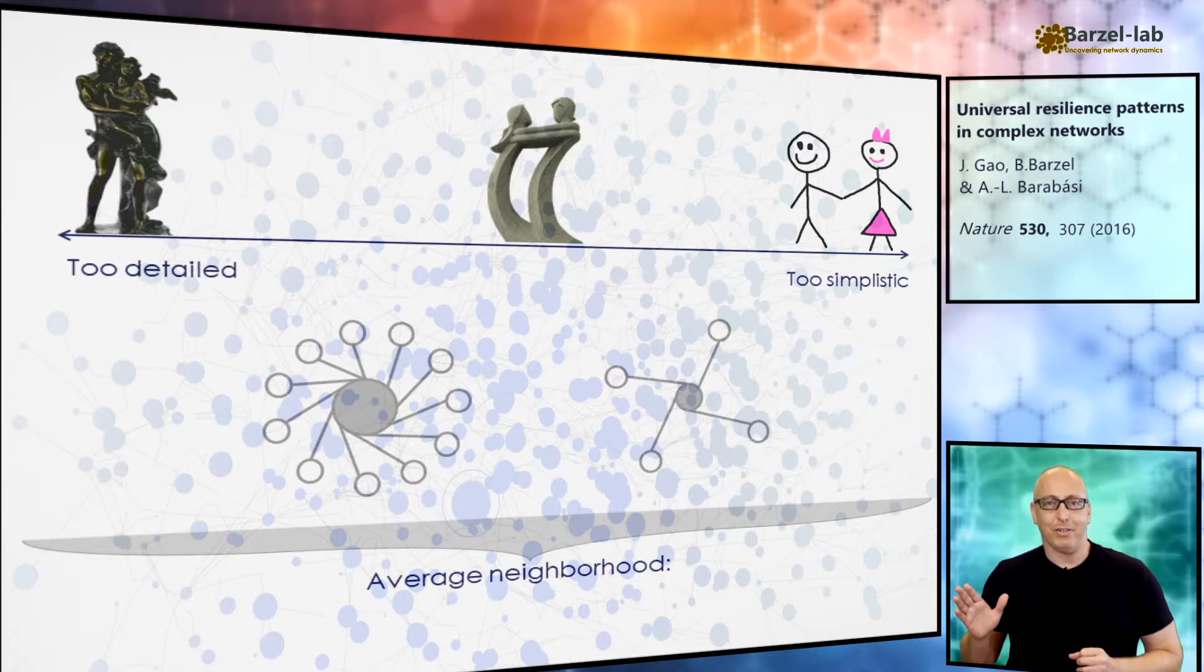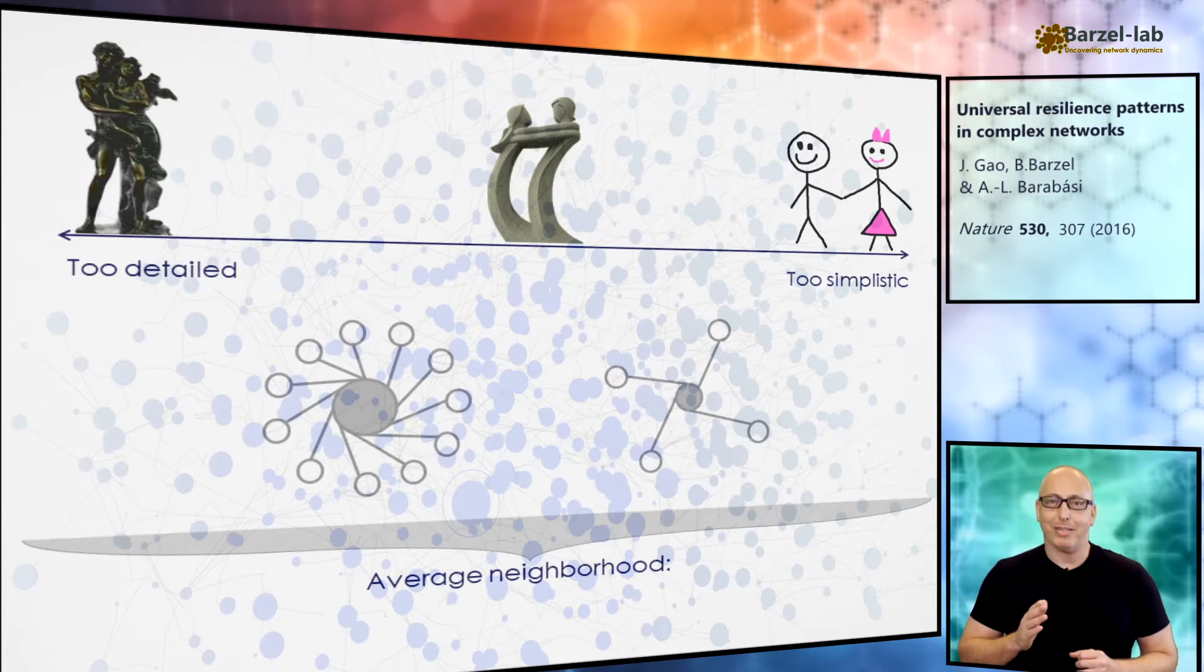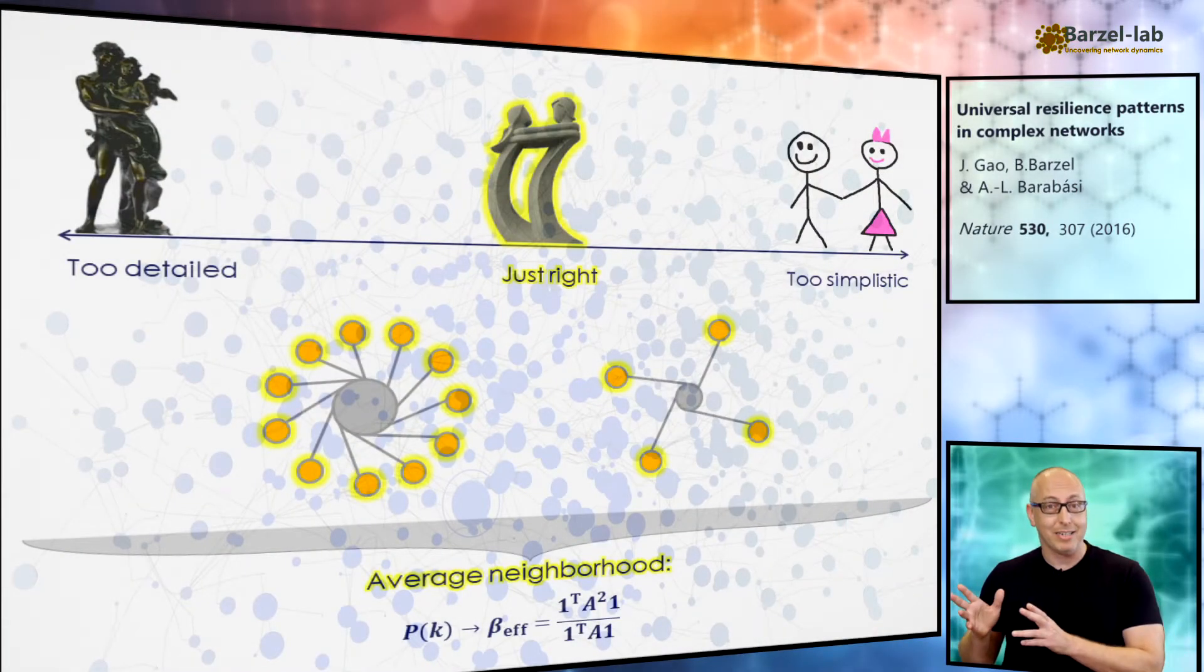Well, the nodes are diverse. We have hubs together with peripheral nodes, but their environments are much more homogeneous. For example, maybe I have two friends, and you have 100 friends. So me and you, we are completely different. But my two friends and your 100 friends are both extracted from the same statistical pool. Our neighborhoods may be of different size, but they are statistically similar.